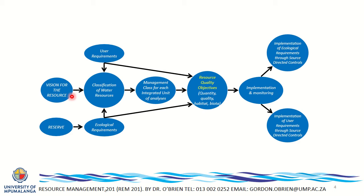We're trying to show how to go from having a vision for the resource — protecting things, getting the balance right — to implementation. This is quite serious: if we don't get this balance right and we use resources excessively, they won't be there. Unemployment, poverty, hunger, water stress, and poor service delivery will all increase as population and demand for resources grows.